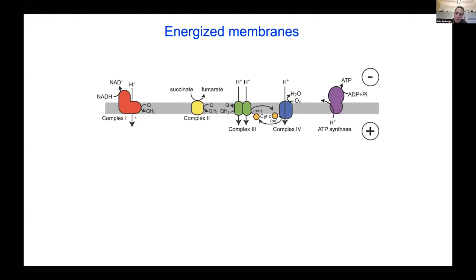NADH is oxidized, electrons are passed to quinone reducing it to quinol, or succinate is oxidized to fumarate, again reducing quinone to quinol. Quinol passes its electrons to complex 3, which passes electrons to cytochrome C, which passes them to complex 4. Finally, the terminal electron acceptor oxygen is reduced to water. The passage of electrons through complexes 1, 3, and 4 translocates the protons that power the ATP synthase.